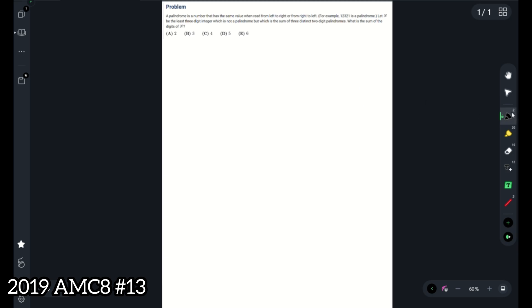Hey guys, today we'll be doing AMC 8, 2019, problem 13. A palindrome is a number that has the same value when read from left to right or from right to left. For example, 12321 is a palindrome. Let n be the least three-digit integer which is not a palindrome but is the sum of three distinct two-digit palindromes.